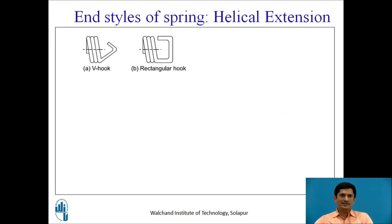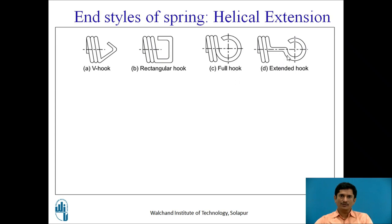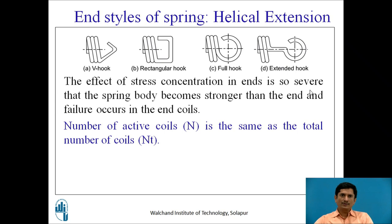For helical extension spring, we have different types of hook ends. One is V hook, second the rectangular one, third is the full hook and fourth is the extended hook. The effect of stress concentration at these ends is so severe that the spring body becomes weaker than the total spring. Number of active coils N is same as that of number of total coils.